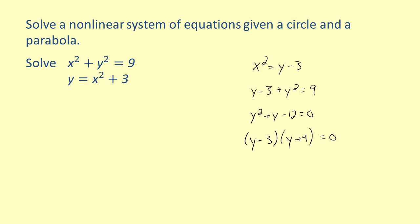Setting each factor equal to zero and solving for y gives us two different y values: three and negative four. Let's substitute these two values into one of the original equations to find the corresponding x values. For the y value of three, substituting into the second equation gives us three equals x squared plus three, so x equals zero. Next, substituting negative four in for y, we get x squared is equal to negative one. Since we cannot take the square root of a negative number, this is an erroneous solution. Therefore, the only solution to this problem is (0, 3).